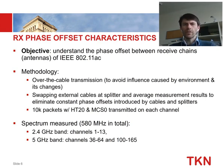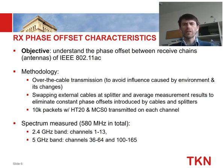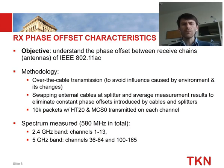Starting with the over-the-cable experiment: we wanted to understand the phase offset between receive chains of our 802.11ac chip, so we ran wired experiments to avoid influence from the environment, multipath, and mobility. We also swapped the external cables of the splitter and averaged the results to eliminate the constant phase offset introduced by cables and splitters. We measured 10,000 packets per channel from both the 2.4 GHz and 5 GHz bands.